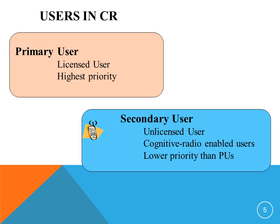Next come the secondary users. They officially don't have access or a license to any frequency band. They are the unlicensed users, also called cognitive radio enabled users. They have low priority compared to that of the primary users.